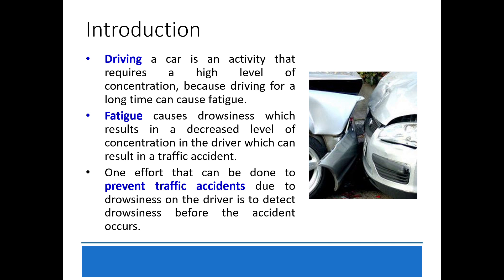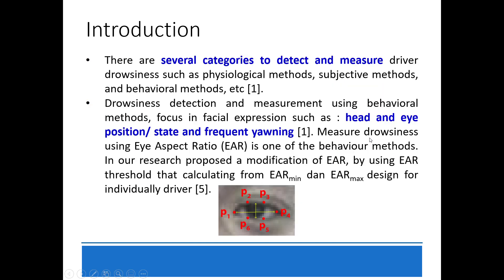One effort that can be done to prevent traffic accidents due to drowsiness in drivers is to detect drowsiness before the accidents occur. There are several categories to detect and measure driver drowsiness, such as physiological methods, subjective methods, behavior methods, and others.